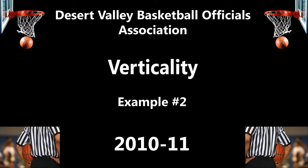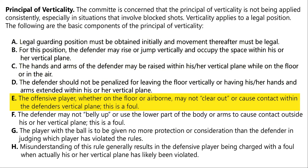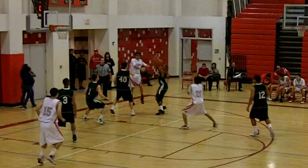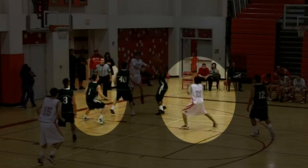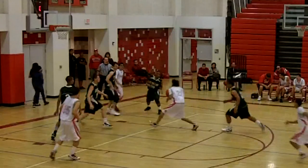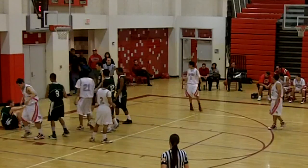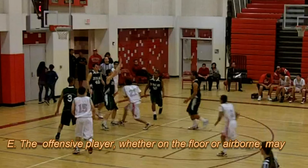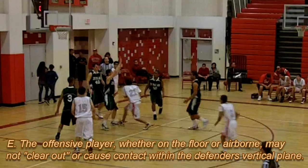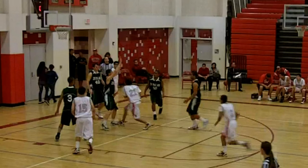Principle E: This next clip will help to demonstrate Principle E as it applies to a defensive player in his vertical plane that receives contact from the offense. We'll watch the action as it occurs in the key between number 21 white and number 1 green. The offensive player, whether on the floor or airborne, may not clear out or cause contact within the defender's vertical plane. Here we can see that the defense has established a legal guarding position and is well within his vertical plane. The offense, in his motion to the basket, causes contact with the defender within his vertical plane. This is a foul.